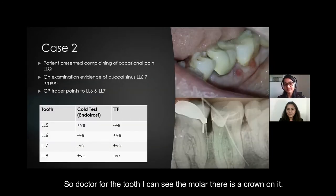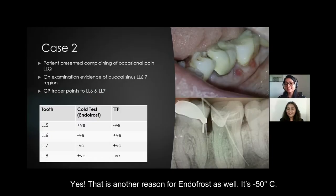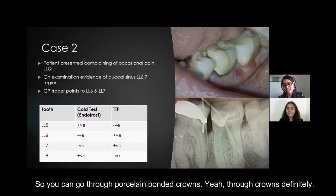Regarding sensitivity testing with a crown on the molar — yes, it can still work. That's another reason for using Endo-Frost, as it is minus 50 degrees Celsius, so it can penetrate through porcelain or metal crowns.